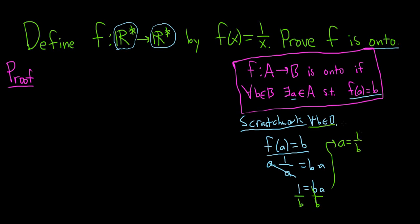So for all little b in capital B, we find our a. Notice that this does make sense because b is not 0. So now let's apply this to our actual proof.